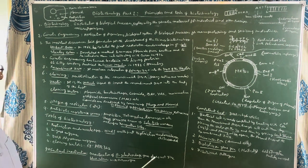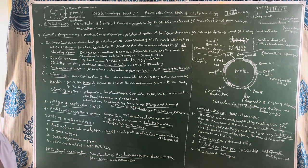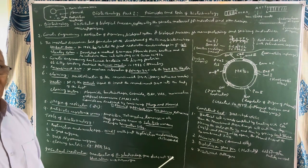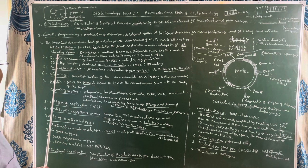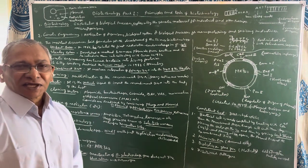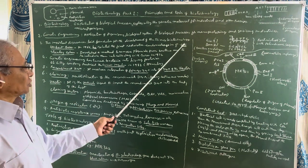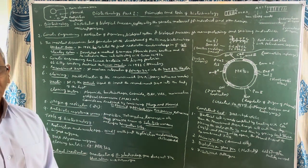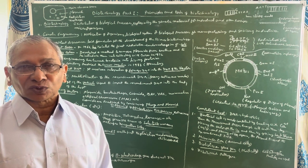In biotechnology, bacteria are very important. The growth of the science of biotechnology is mainly based upon the work of two scientists. Herbert Boyer in 1966 isolated the first restriction endonuclease enzyme from bacteria, specifically from Escherichia coli or simply E. coli. The isolation of restriction endonucleases is one of the important steps in the growth of biotechnology.